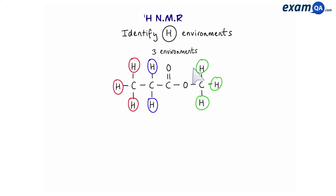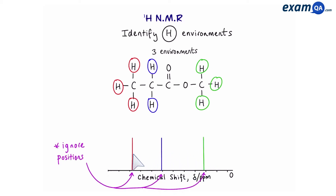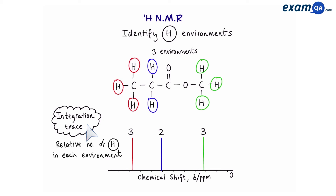So now we're quite good at identifying environments. The next skill is to be able to draw peaks. In NMR the x-axis shows chemical shift, and for this molecule you'll see three peaks — one for each environment. We're going to ignore the positions of the peaks for now and focus on the fact that three environments means three peaks. Above the peaks we'll see numbers known as integration trace numbers or integration ratios, which represent the relative number of hydrogens in each environment. The red environment has three hydrogens, the blue has two, and the green has three, giving ratios of 3, 2, and 3.